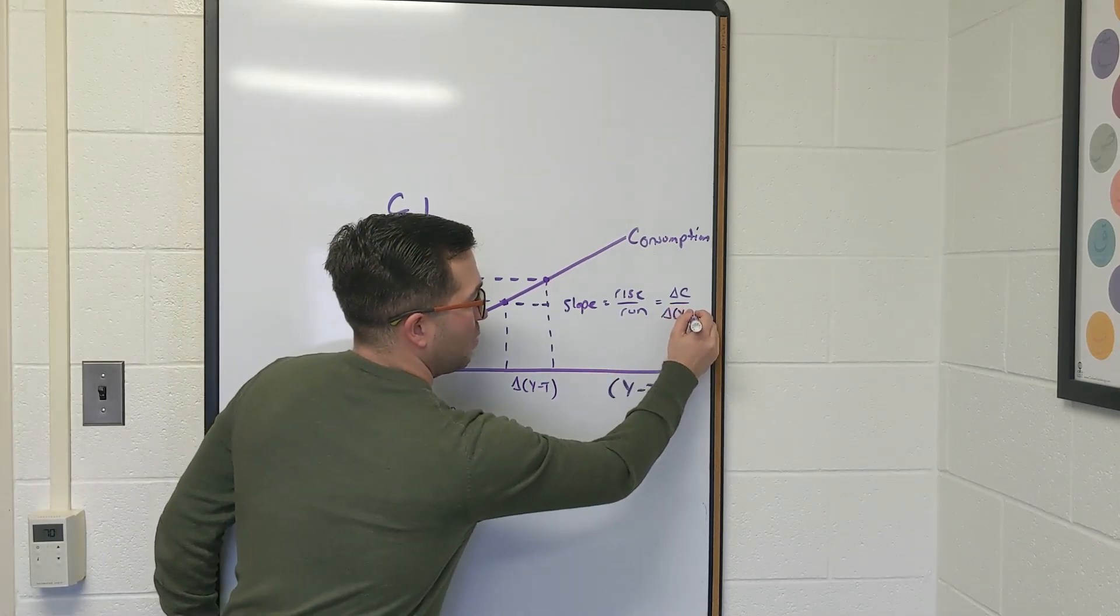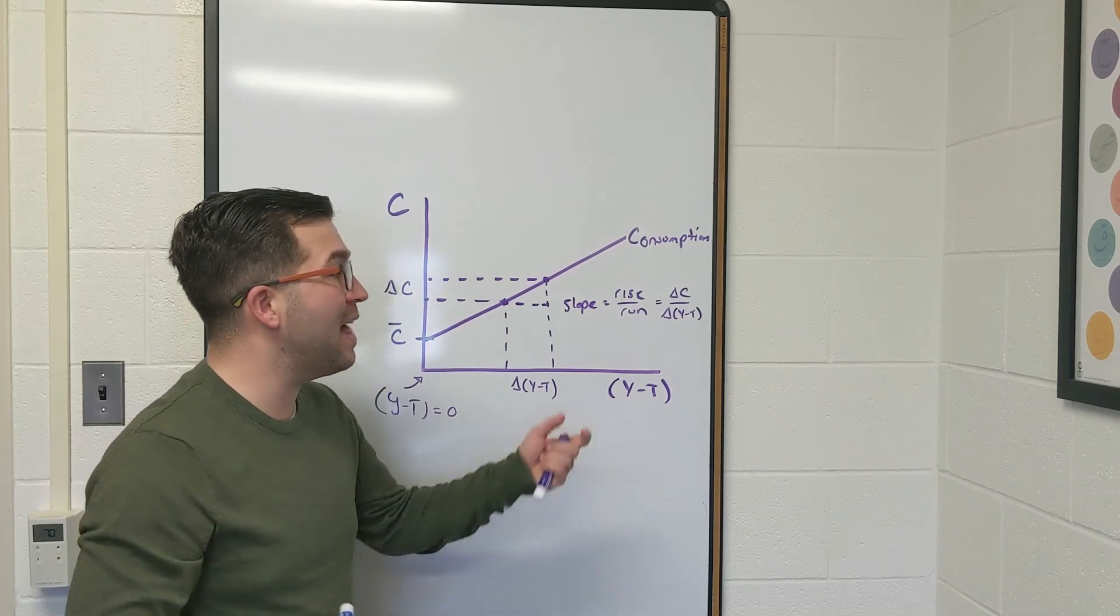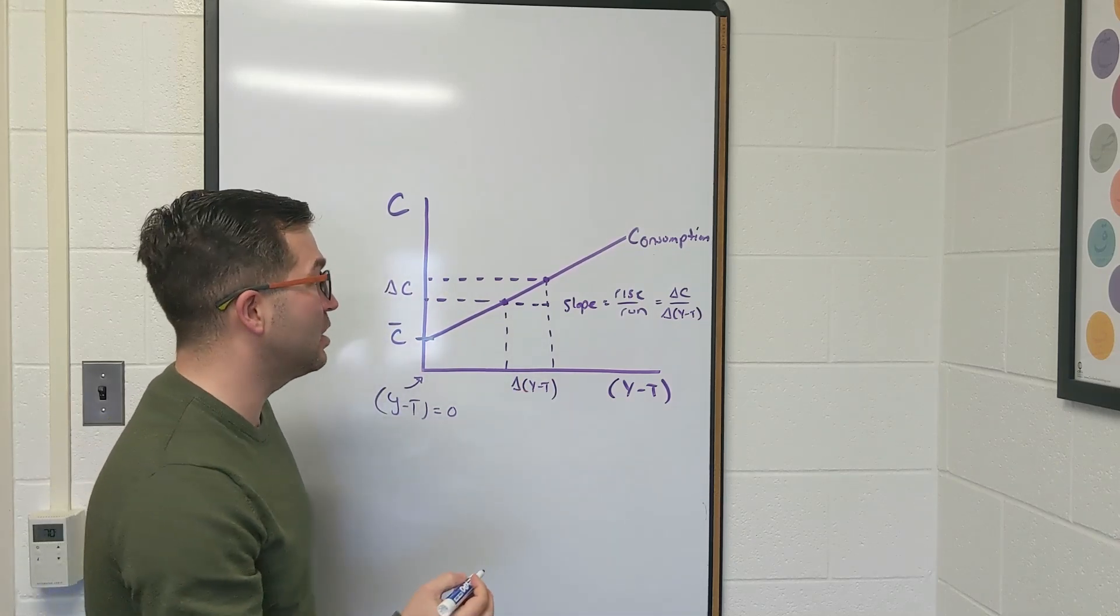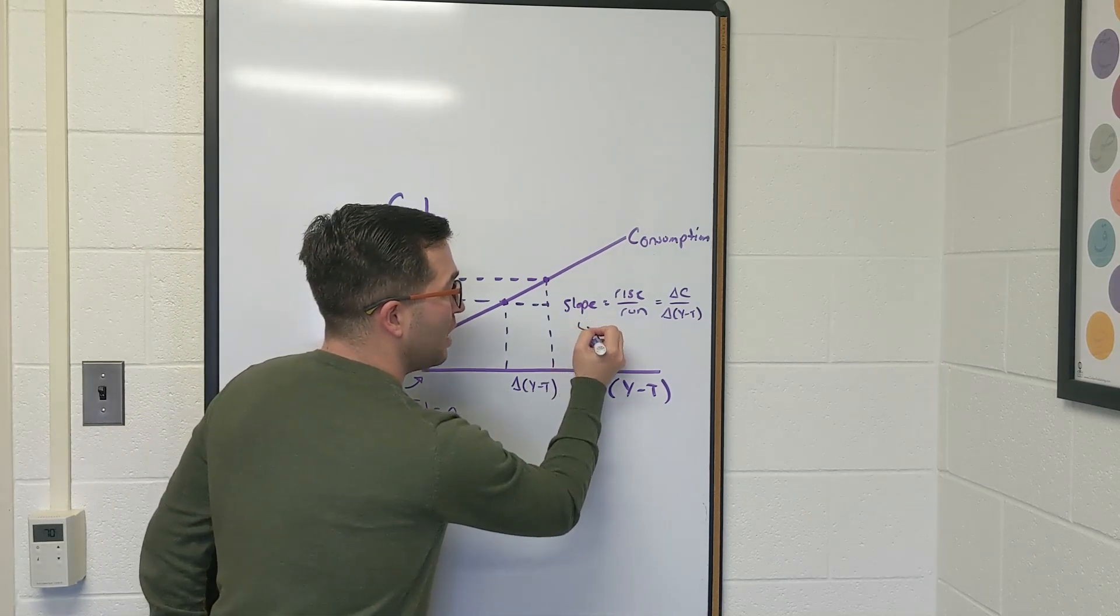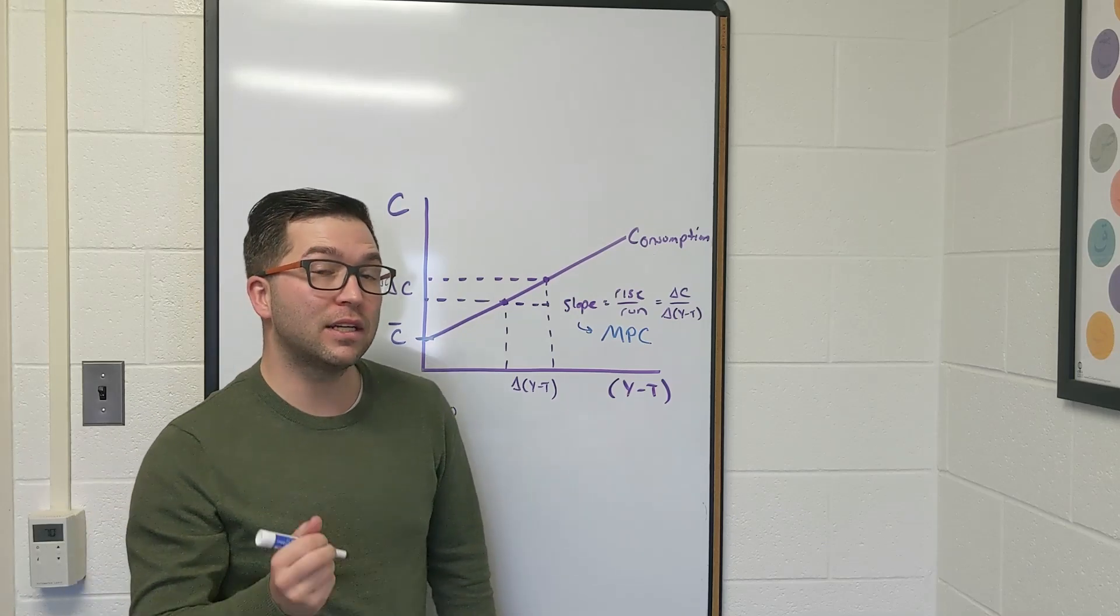So this is change in disposable income. Well, what is that? We've already defined that. We've defined that as the marginal propensity to consume. So the slope is going to be that MPC, marginal propensity to consume.